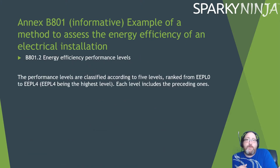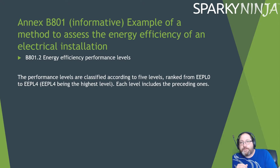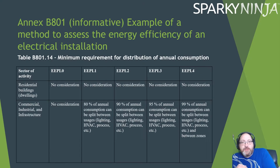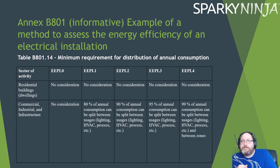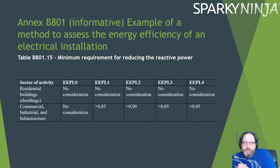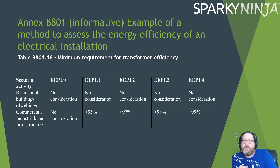Energy efficiency performance levels are also classified according to five levels, zero to four — similar to efficiency measures but distinct. For minimum requirement for distribution of annual consumption: 99% of annual consumption must be distributable between usages such as lighting, HVAC, and process, and between zones. For reactive power: no consideration for dwellings; commercial and industrial require a power factor greater than 0.95. For transformer efficiency: a minimum of 95% is required to score anything.